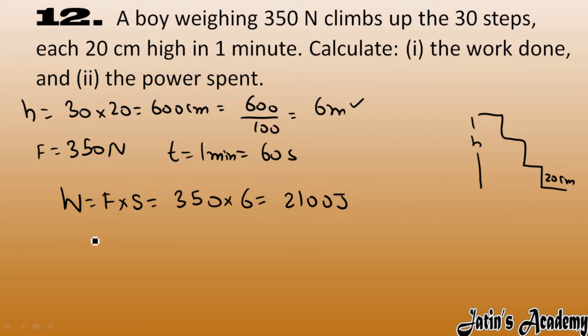Power equals work done per unit time. Work done we have is 2100 joules, and time we have is 60 seconds. So here we get 35 watts as the power.